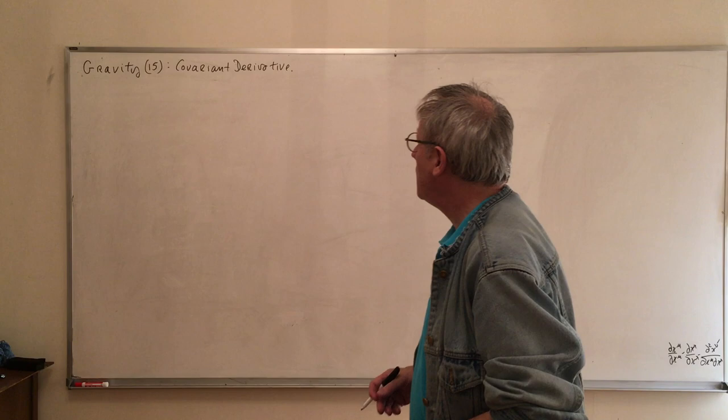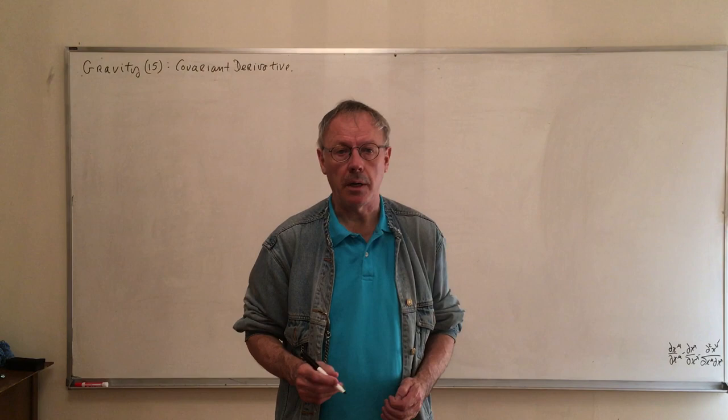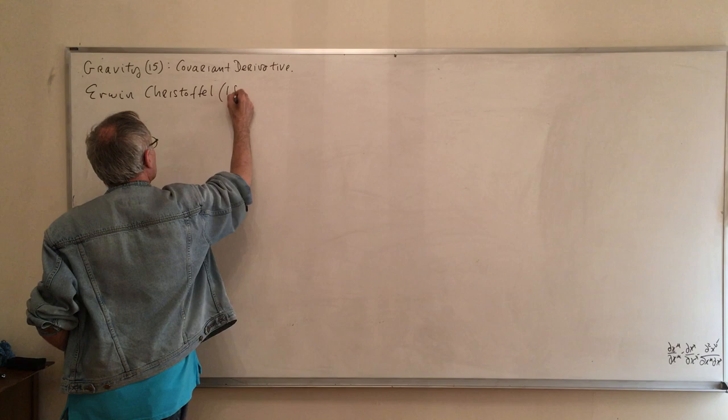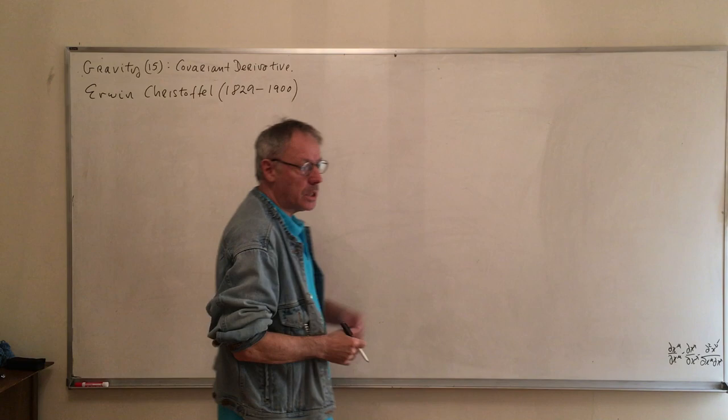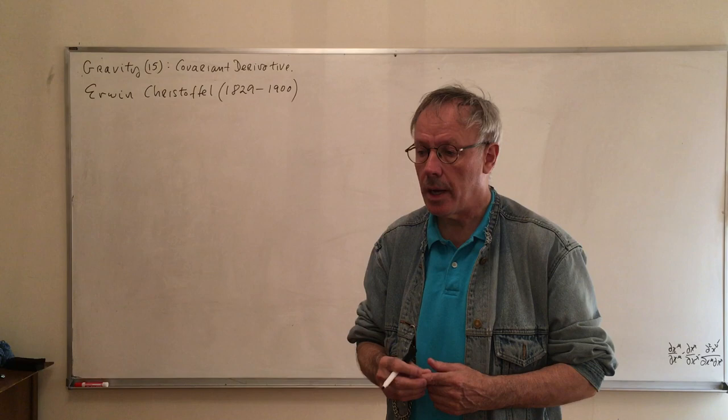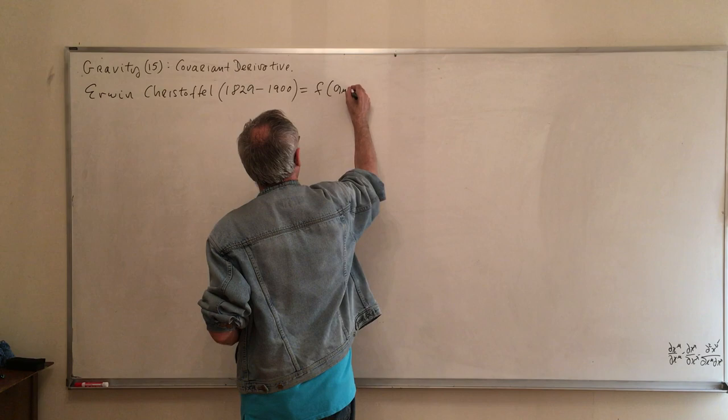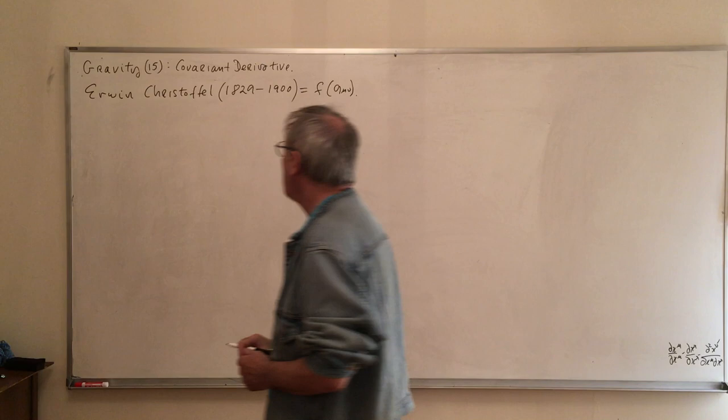We're going to be using the Christoffel symbols. Symbol, if you like. And people say there are two kinds. There's really only one. One multiplied by a metric tensor. And basically it's a function of the metric tensor. Now the form of this function we're not going to derive today. We're just going to see the role of the Christoffel symbol.